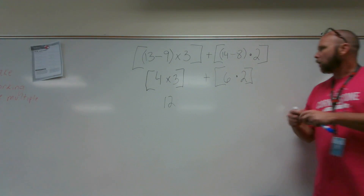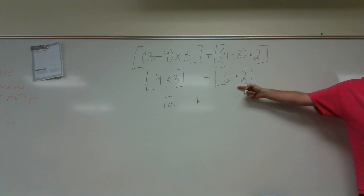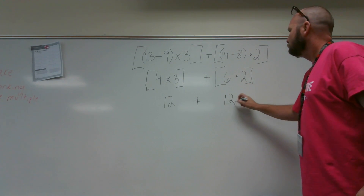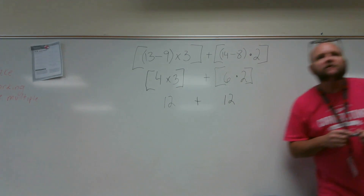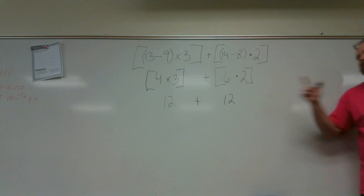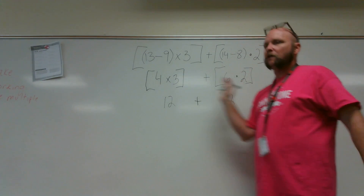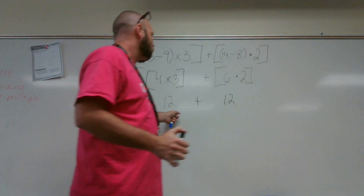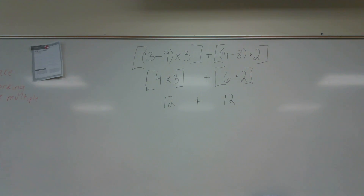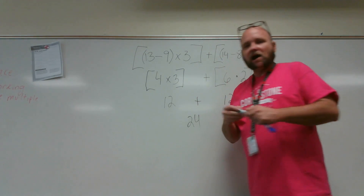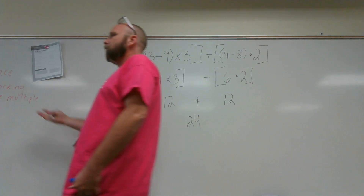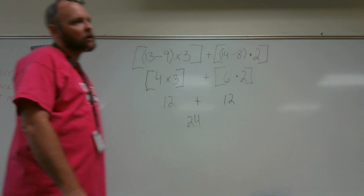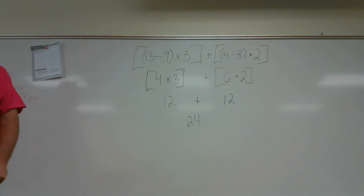Oscar, you were helping me here. What is the product of 6 and 2? 12. Let's note: 6 and 2 are called factors. 6 and 2 are factors, and the product is 12. So now, if you've done all the math correctly, we have to find the sum of 12 and 12. Rocky? 24. So if we followed the correct order and did our arithmetic correctly, we get an answer of 24.